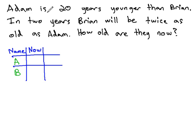Right now, we are told that Adam is 20 years younger than Brian. This tells us how Adam is related to Brian. However, we aren't given any information about Brian. So, let's make Brian x.